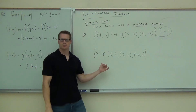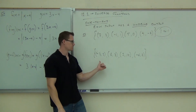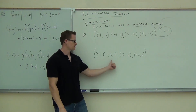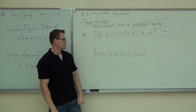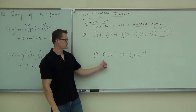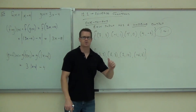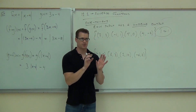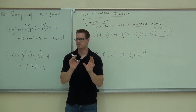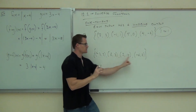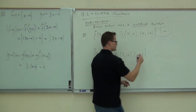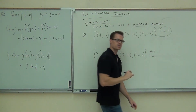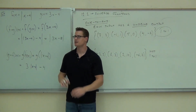Now here's another function. The inputs are 3, 6, 2, negative 7. The outputs are 2, 3, 14, 2. Do any of your outputs happen twice? Yes — the output 2 repeats. If your outputs happen twice, it's not 1-to-1. Outputs must be unique; they don't happen twice.